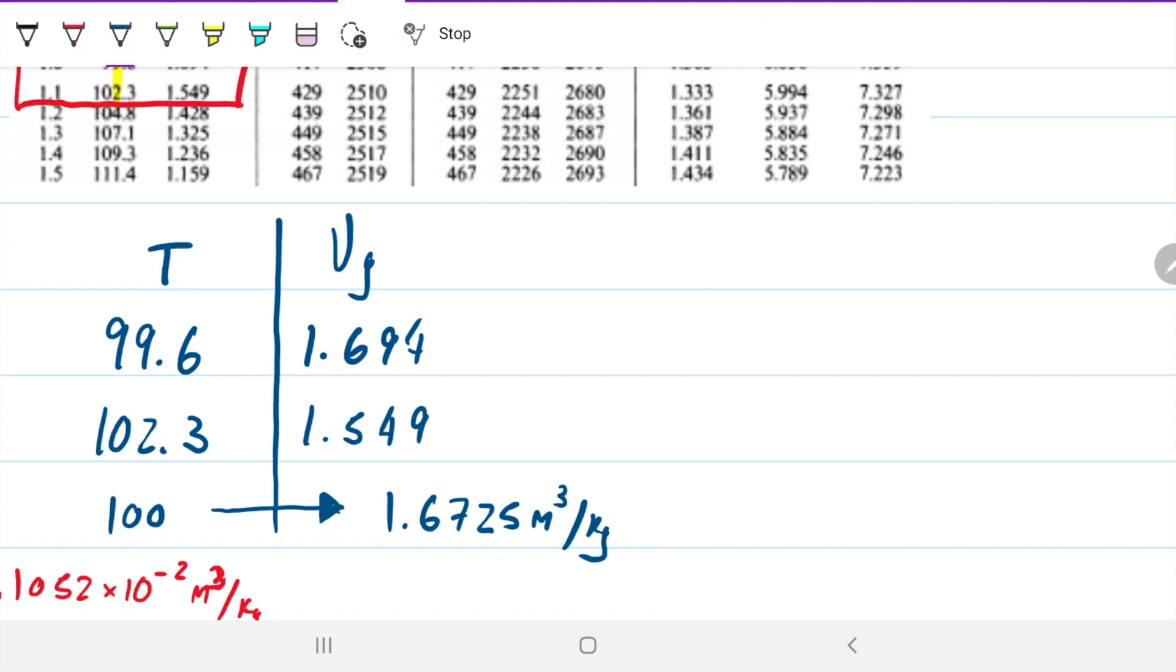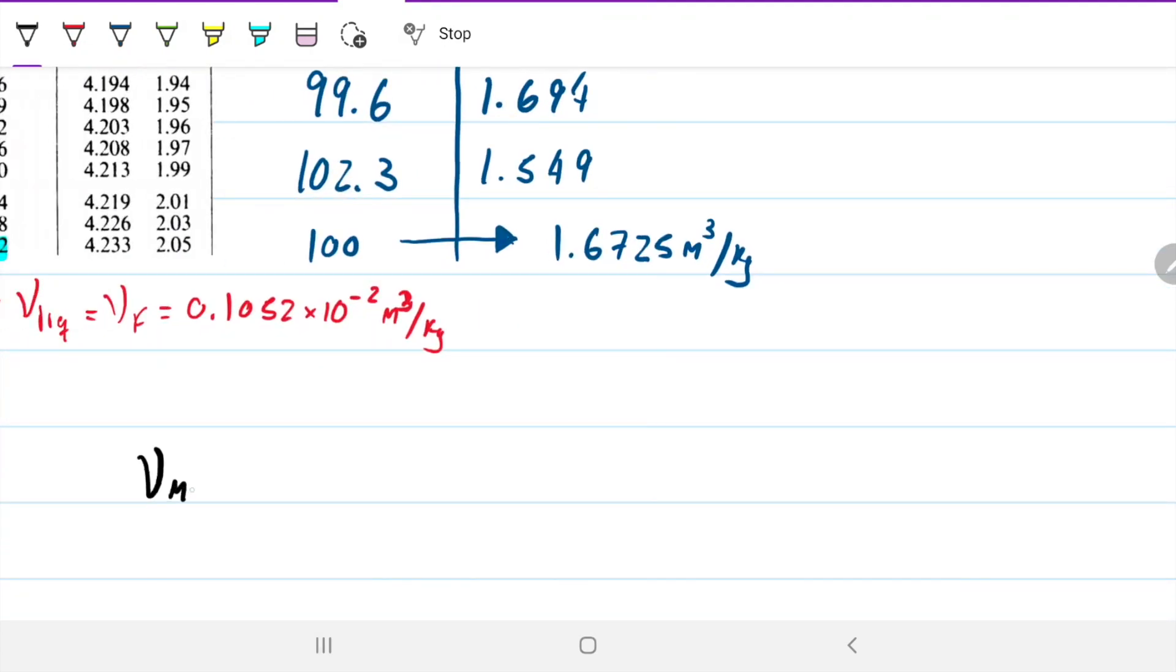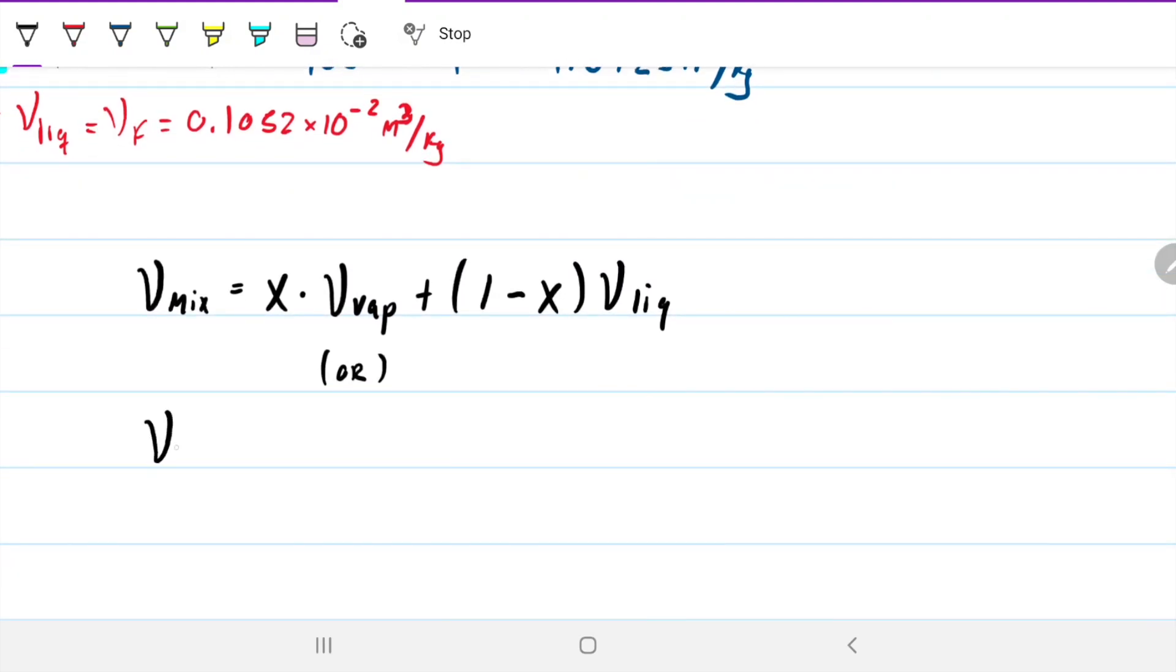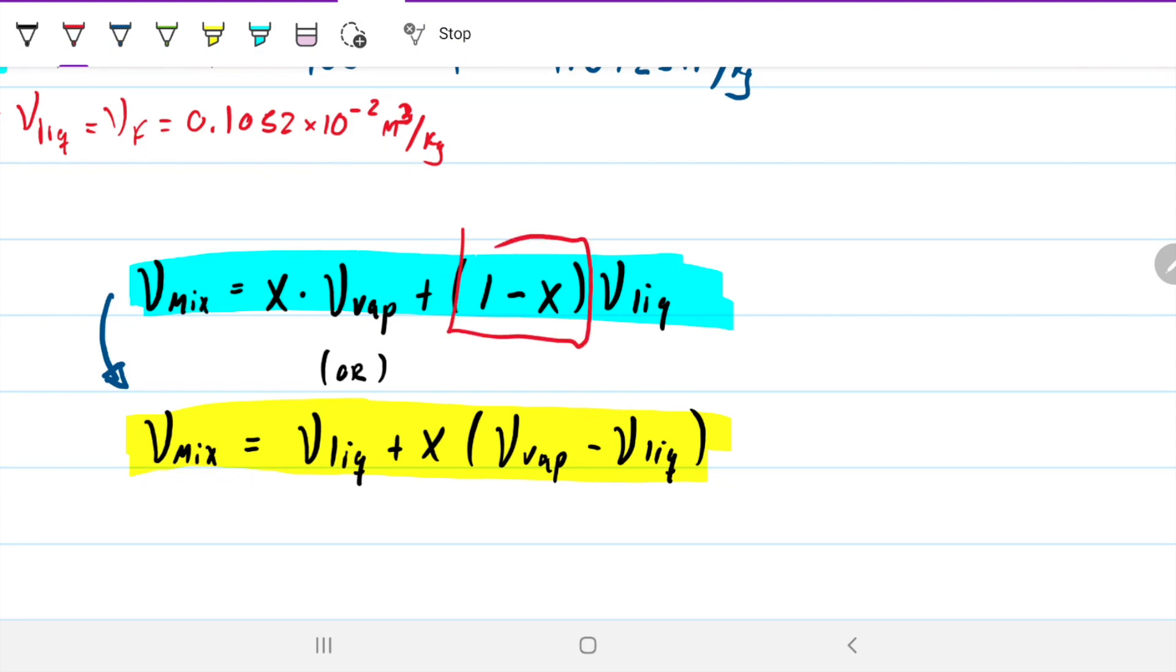That means we have the two values that we were missing to be able to calculate the mix. To calculate the mix, the Vmix will be equal to the amount of vapor times the specific volume for vapor, and whatever is left (100% minus the amount of vapor) times the liquid. Mathematically, there's another way to write this down. Vmix equals the VF plus X times (VG minus VF). They're just saying the same thing. I find this one more intuitive, but the advantage of the bottom one is we don't have to do the one minus X. Regardless, the result is going to be exactly the same.